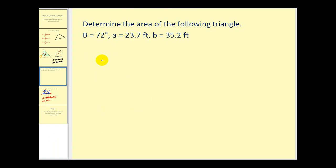Let's take a look at this problem now. Let's sketch a triangle. Angle B is 72 degrees, side A is 23.7 feet, and side B is 35.2 feet. Remember, in order to use that area formula, we have to have the included angle. We're going to have to find the length of side C to include angle B, or find the measure of angle C, because it is included by side A and side B. This becomes a little tricky because side C is opposite angle C, and we don't know either of those values.